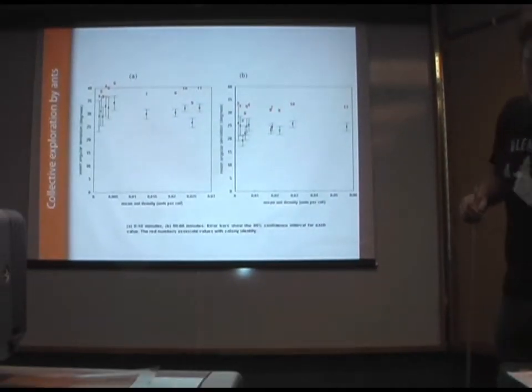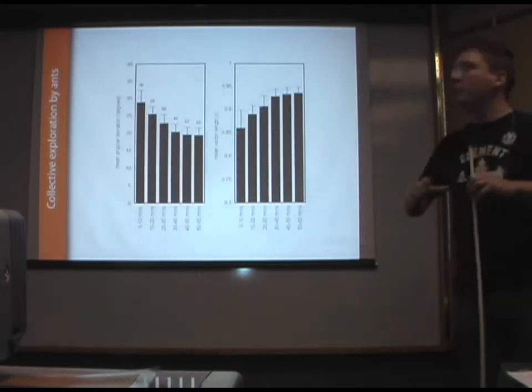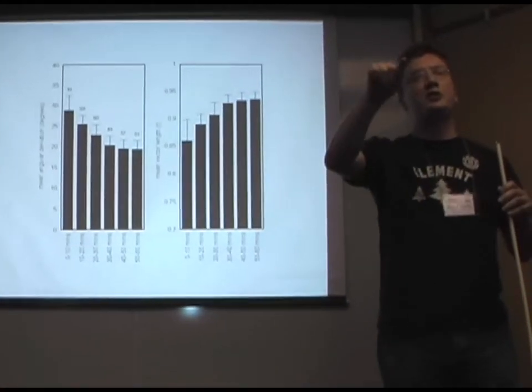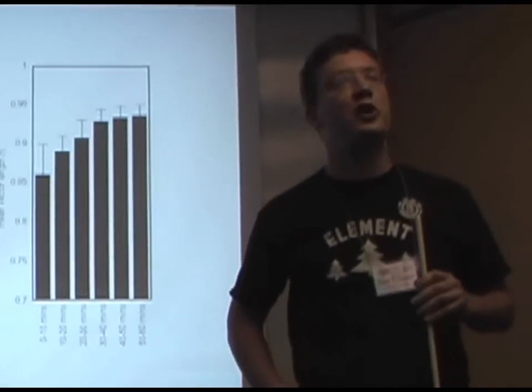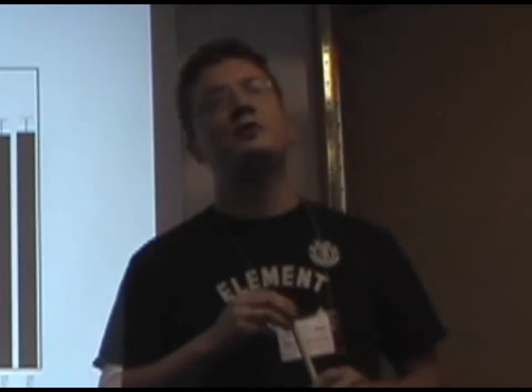There was a previous theory that predicted, or that argued, that what the ants would also do was, as density increased, the optimal strategy should be to have a more tortuous trajectory. And there was one paper that showed that that was actually the case.